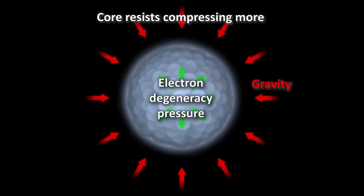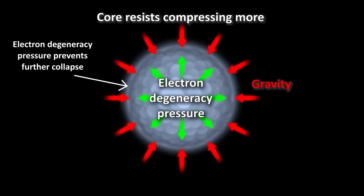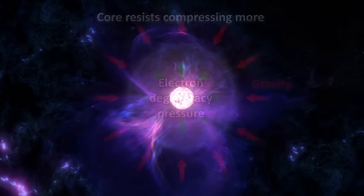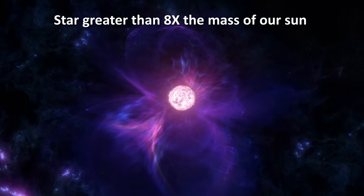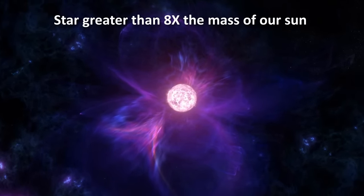A white dwarf doesn't collapse against gravity because of the pressure of electrons repelling each other in its core. But for massive stars greater than about 8 times the mass of the Sun, their fate is much more spectacular.